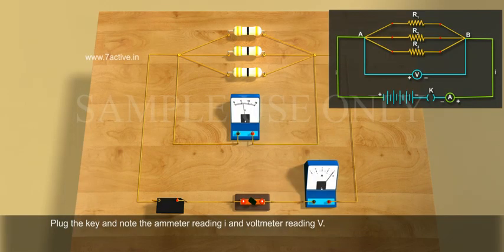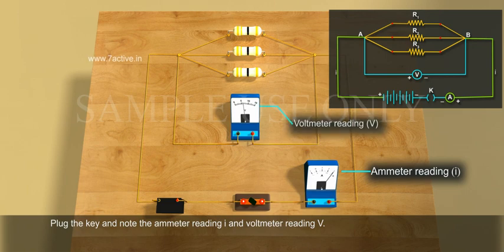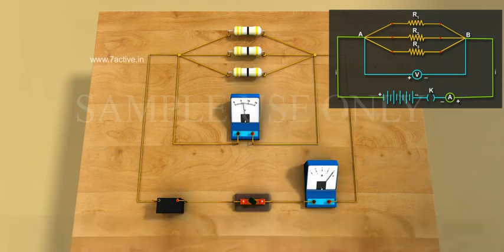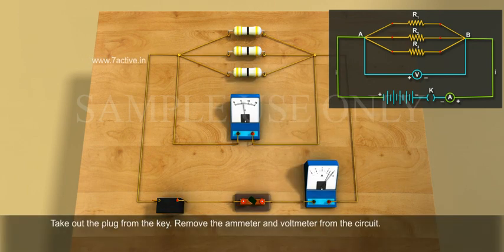Plug the key and note the ammeter reading I and voltmeter reading V. Then take out the plug from the key.